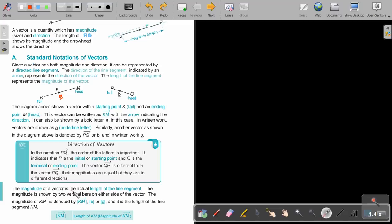The magnitude of a vector is the actual length of the line segment. The magnitude is shown by two vertical bars on either sides of the vector. Remember, not brackets, vertical bars. The magnitude of KM is denoted by KM, or it's just an A. Remember, you can use a small letter, bold printed, or underline it. But every time, there's vertical bars, and it's the length of the line segment, KM.